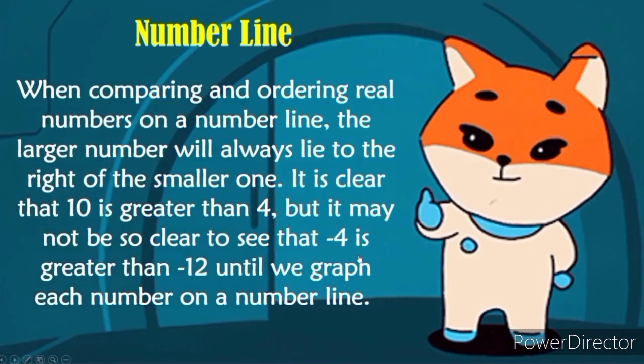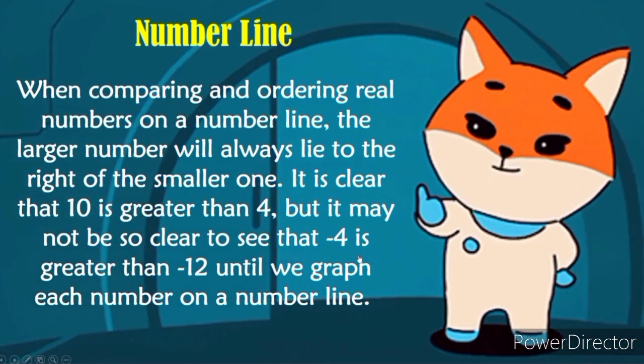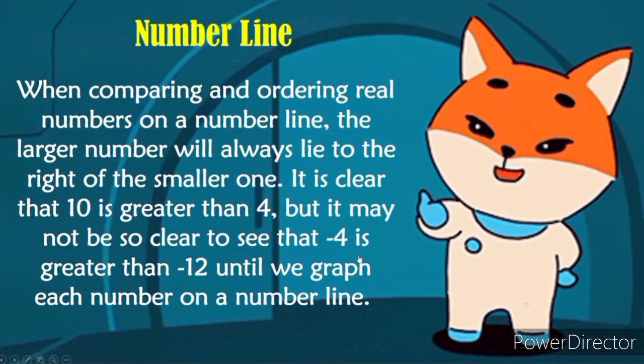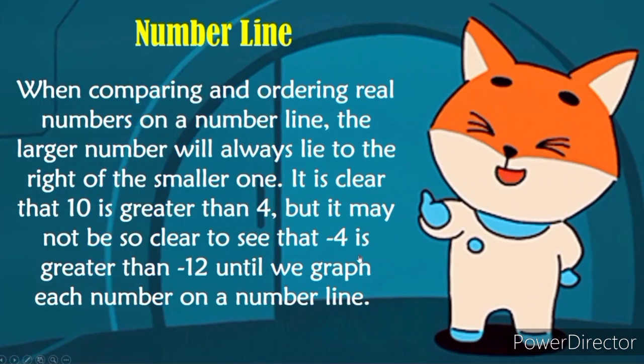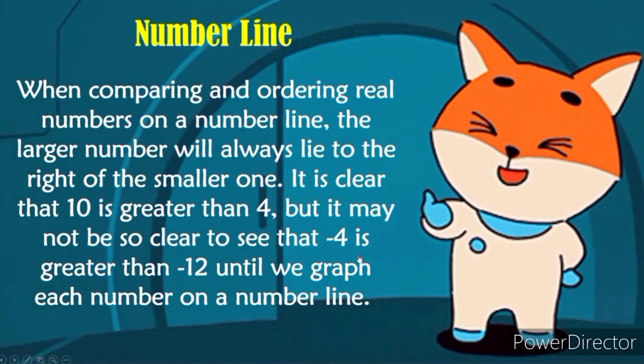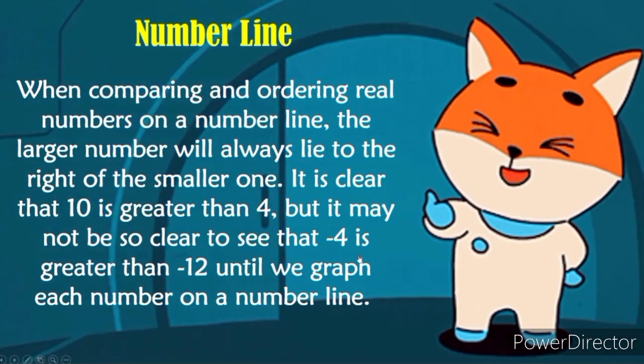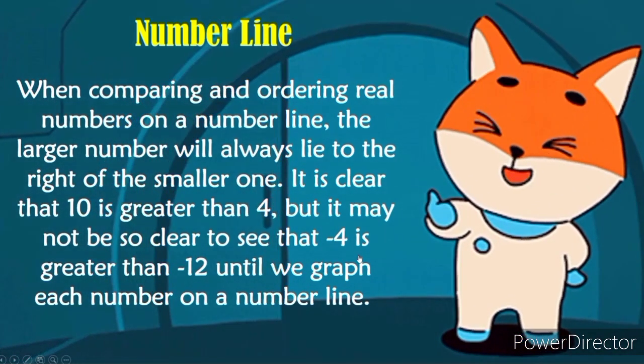When comparing and ordering real numbers on a number line, the larger number will always lie on the right of the smaller one. It is clear that 10 is greater than 4. But it may not be so clear to see that negative 4 is greater than negative 12 until we graph each number on a number line.